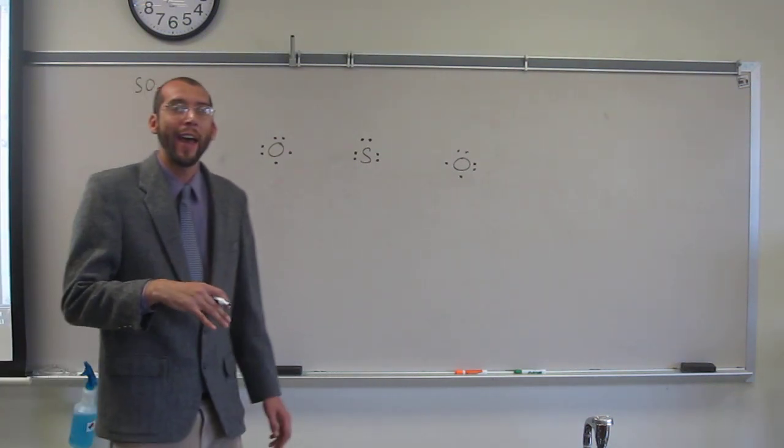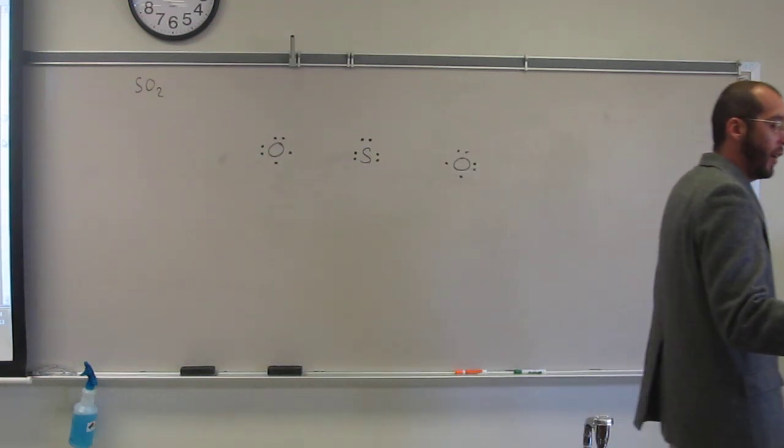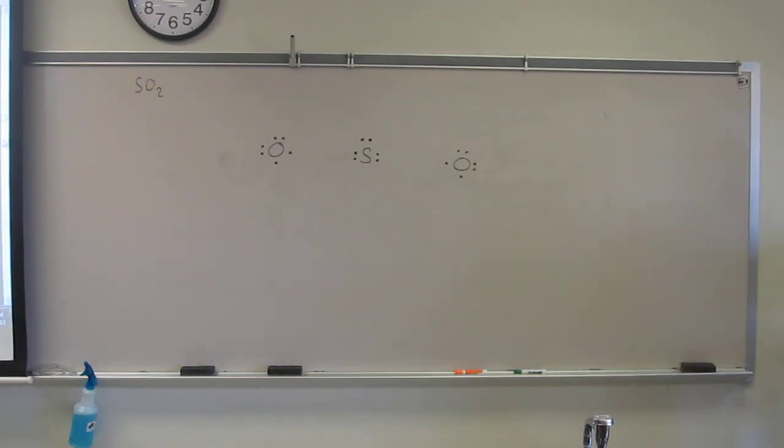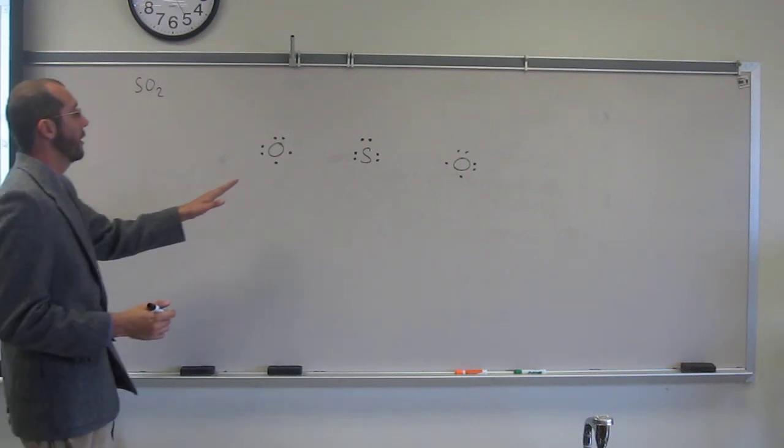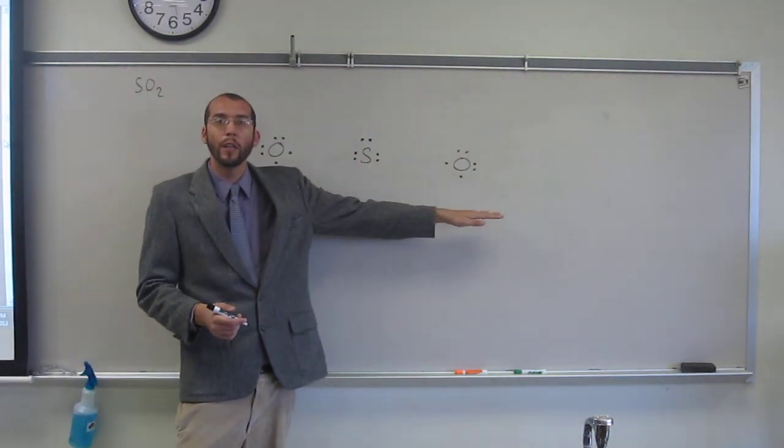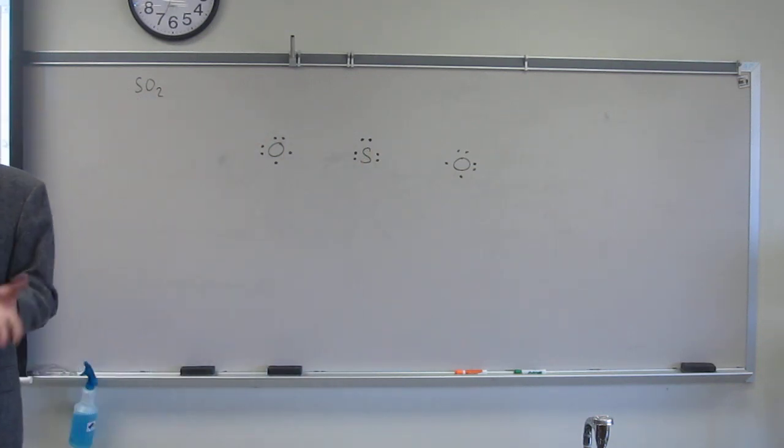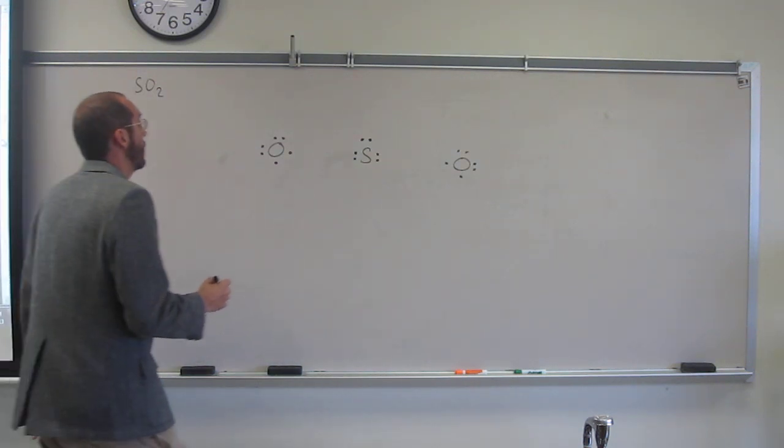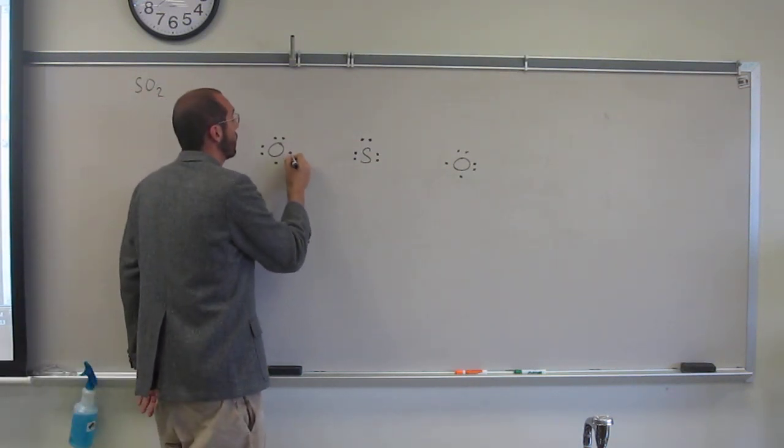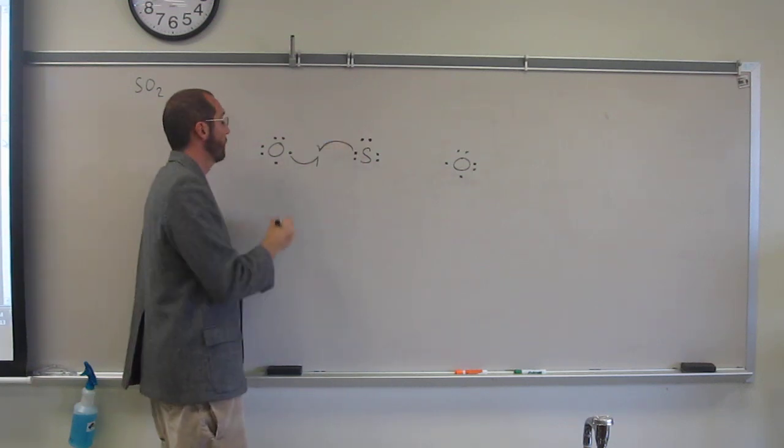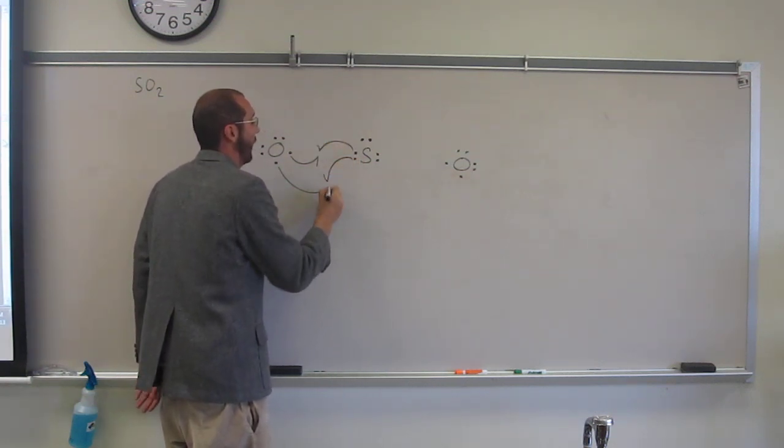So once you get by that, once you come to terms with that, then all it is, is just doing the exact same thing as we did before. Just connecting bonds by sharing electrons. So in this case, this oxygen needs to complete its octet, and this oxygen needs to complete its octet. The sulfur is going to go over its octet to expand its valence. So when it does that, we're going to show the double bonds here, so like that, like that.